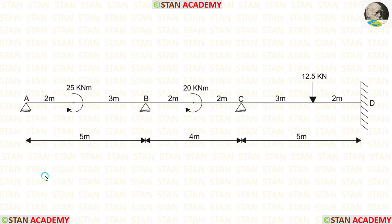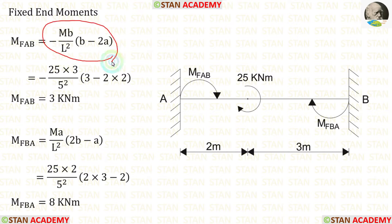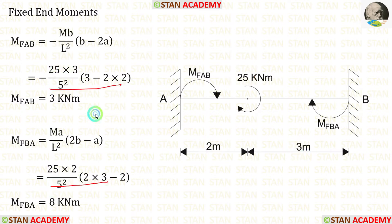Now we are going to find the fixed end moments. First, let us take span AB and find the fixed end moments. In span AB, there is a clockwise concentrated moment not acting at the center. The formulas to calculate the fixed end moments are: minus MB/L² × (B − 2A) and MA/L² × (2B − A). Here M is 25, A is 2, B is 3. Applying these values, we get M_AB and M_BA.